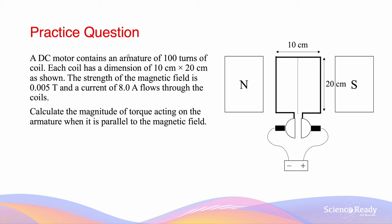A DC motor contains an armature of 100 turns of coil. Each coil has dimensions of 2 cm × 20 cm. The magnetic field strength is 0.005 Teslas and a current of 8 Amperes flows through the coils. Calculate the magnitude of torque when the armature is parallel to the magnetic field — that is, when it's in the horizontal position.